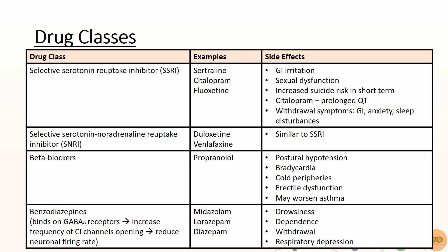The next class is SNRIs. Examples include duloxetine, and the side effects are quite similar to those of SSRIs but of lower frequency. Sometimes drugs such as beta-blockers and benzodiazepines can be used in the short term for acute or psychological symptoms. Beta-blocker side effects include postural hypotension and bradycardia — be cautious in patients with asthma. Benzodiazepines act on GABA-A receptors and increase the frequency of chloride channel opening, thereby reducing the neuronal firing rate. Examples include short-acting midazolam, intermediate-acting lorazepam, and long-acting diazepam. Side effects include drowsiness, respiratory depression, and dependence especially after use for more than a month, as well as withdrawal signs.